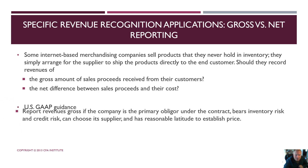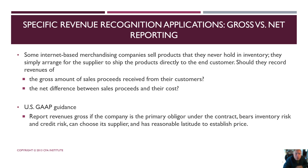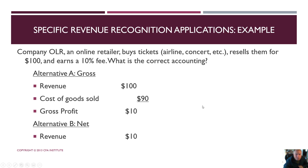U.S. GAAP guidance is that revenue is reported gross if the company is the primary obligor under the contract, bears the inventory risk and credit risk, can choose its supplier, and has reasonable latitude to establish price. The inventory risk criterion is often the most problematic. Otherwise, you report revenues net. This applies to platforms selling airline tickets, concert tickets, or travel services like Travelocity. If revenue is gross, you'd show revenue of 100, cost of goods sold, and a profit of 10 — versus simply reporting 10 net. These metrics matter when evaluating the strength of a company.